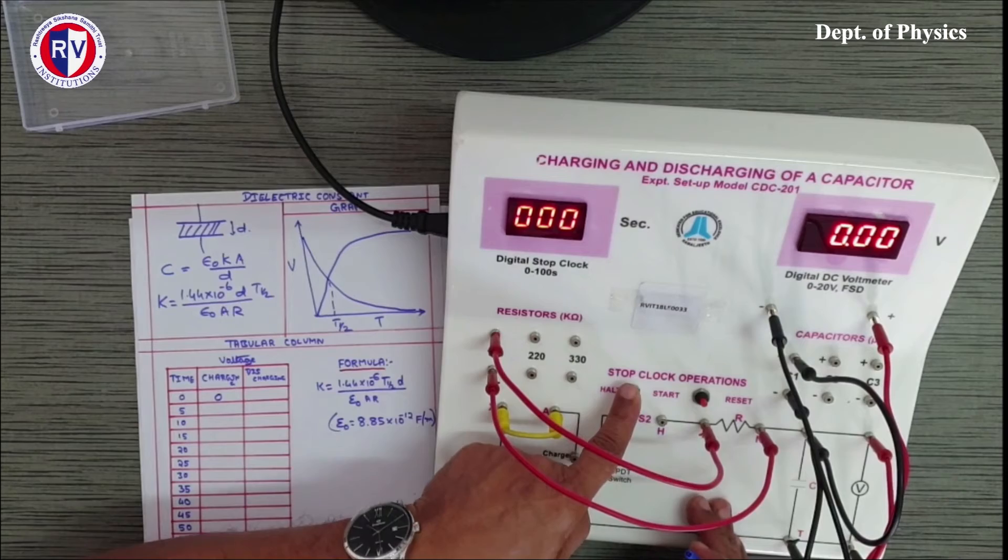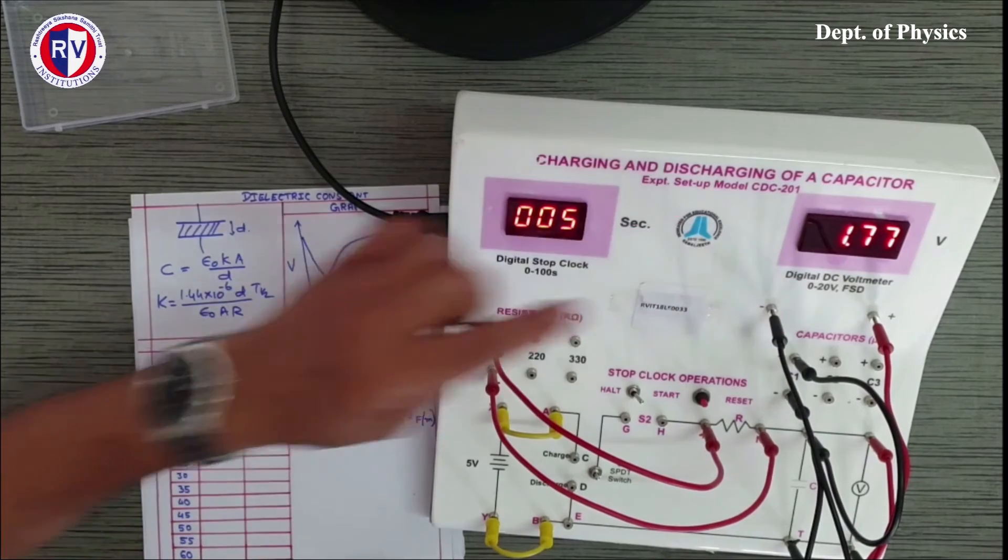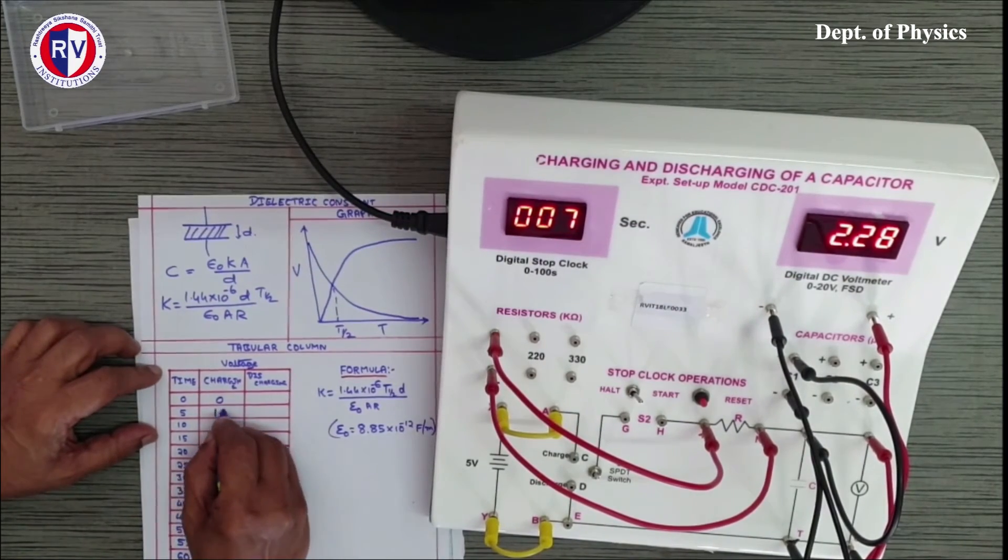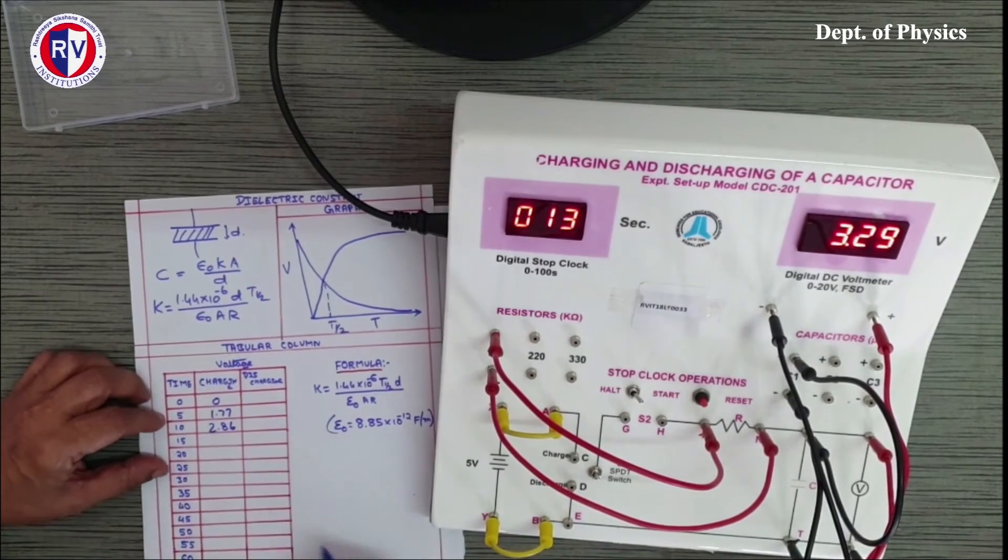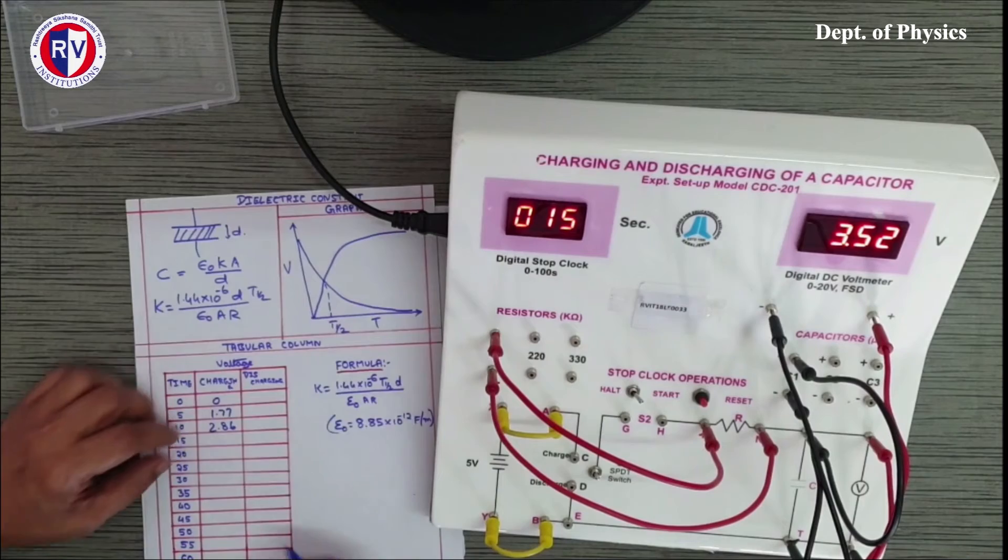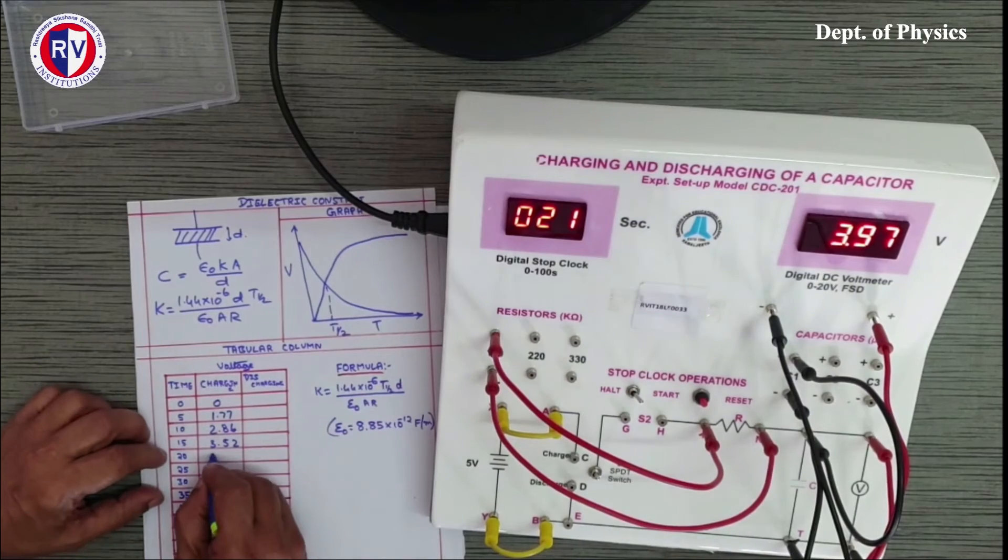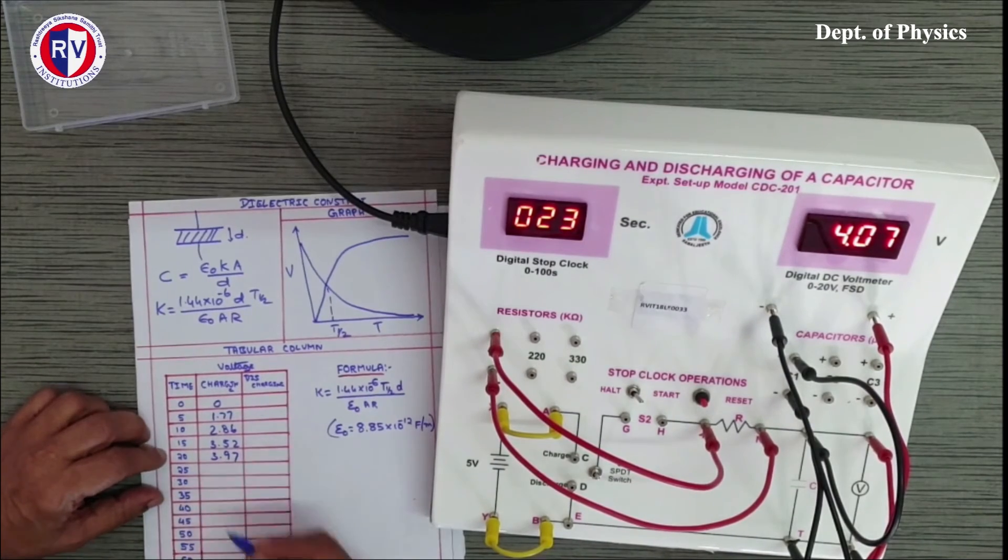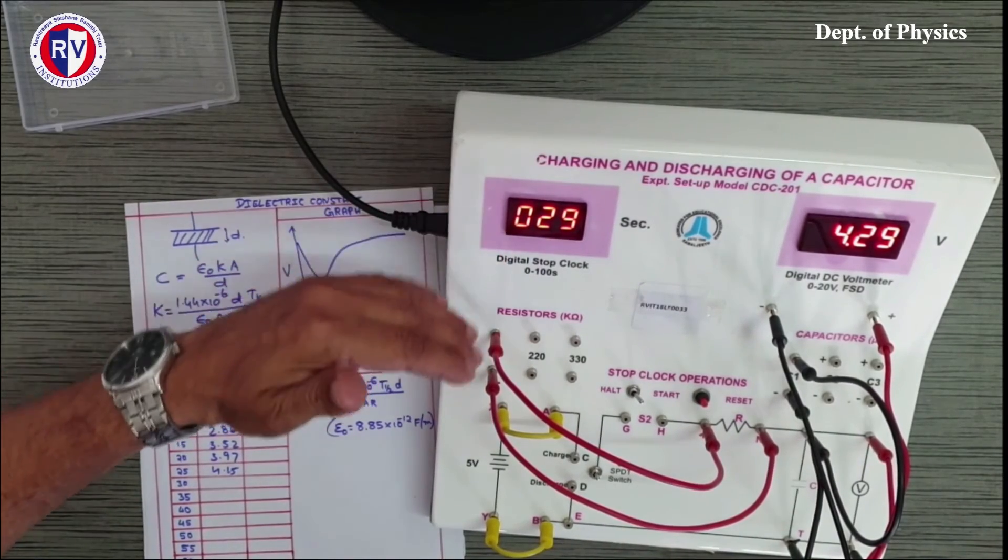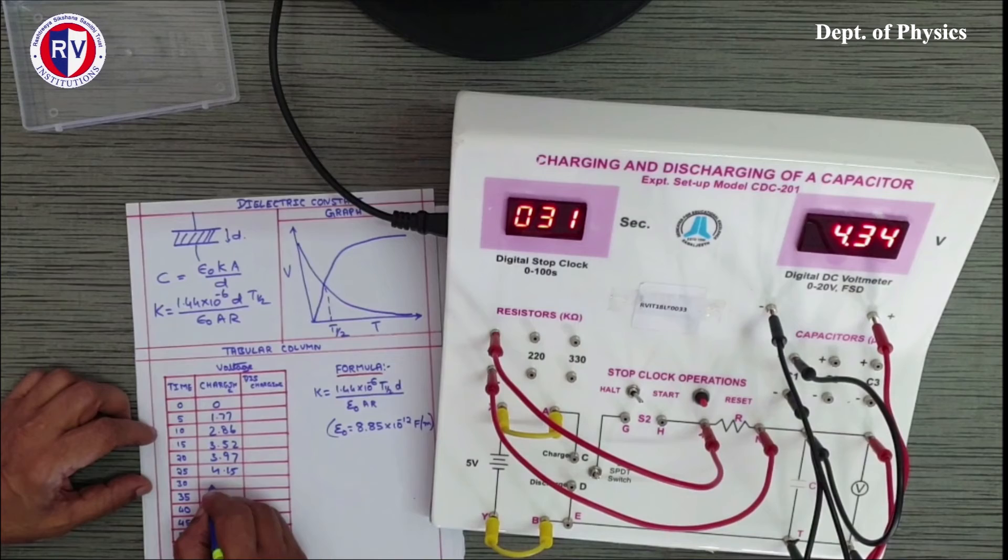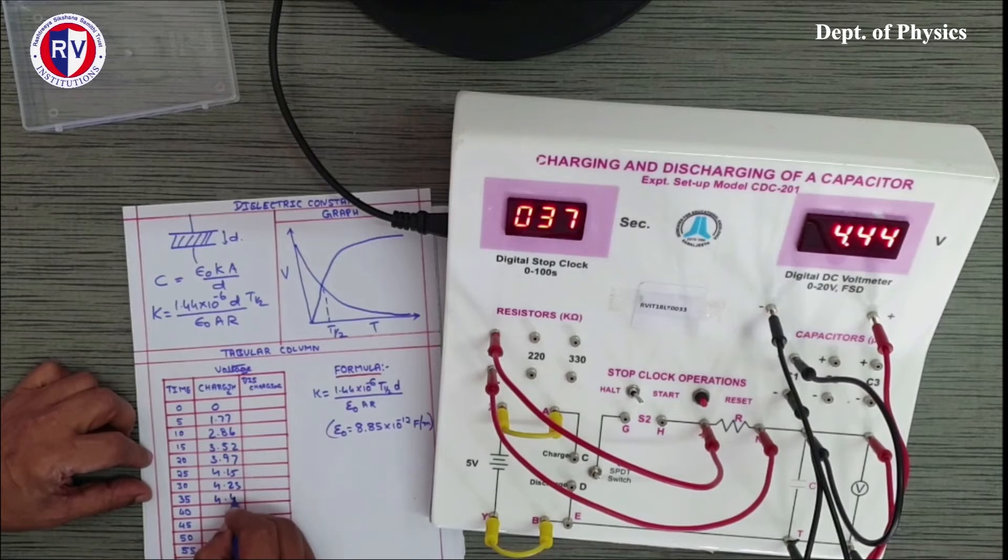Let us see. At 5 seconds, switch on. You can see the timer shows time, at 5 seconds, 1.77 volts. Now for 10 seconds I am getting 2.86, 15 seconds 3.52, 20 seconds 3.97. Gradually the change is coming down.